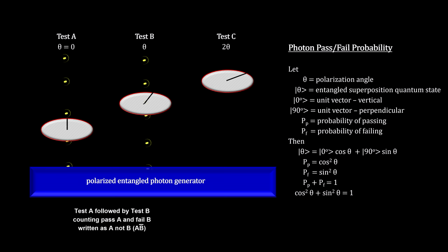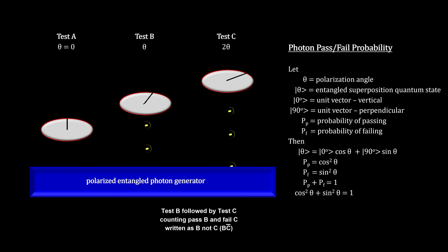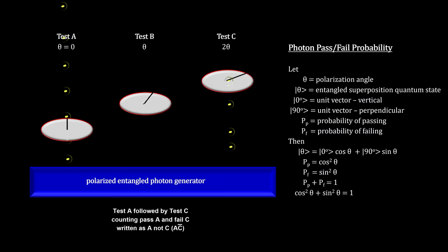What Bell was looking for are the number passing test A, followed by failing test B, called A-not-B. The number passing test B, followed by failing test C, called B-not-C. And the number passing test A, followed by failing test C, called A-not-C.